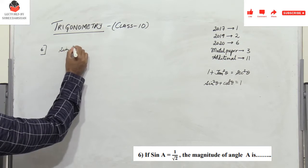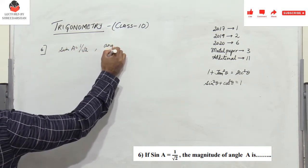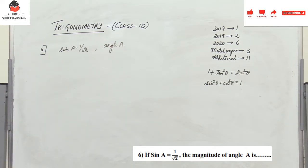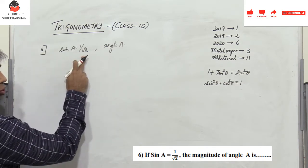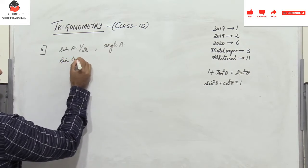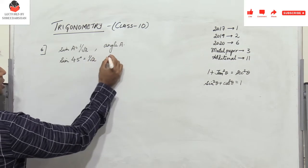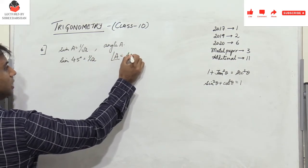Problem 6 is from the previous model question paper released by the state board: if sin a = 1/√2, what is angle a? We know sin45° = 1/√2, so angle a = 45°. Very simple problem.